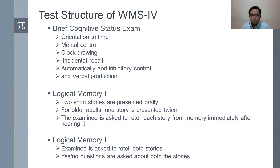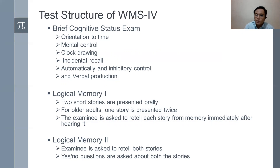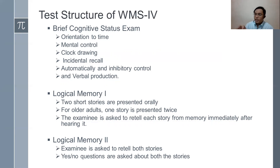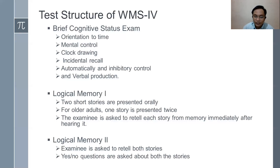Next is logical memory. Logical memory 1 presents two short stories orally. For older adults, one story is presented twice, considering their limitations. The examinee is asked to retell each story from memory immediately after hearing it — right after the story, the examinee retells what they understood. Logical memory 2: the examinee is asked to retell both stories, and yes-or-no questions are asked about both stories.